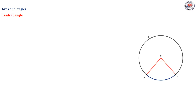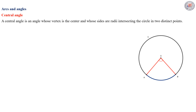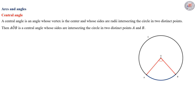Let's move to arcs and angles, and start with the central angle. By definition, a central angle is an angle whose vertex is the center and whose sides are radii intersecting the circle in two distinct points A and B, with vertex O, which is the center of the circle. We have a property concerning central angles.